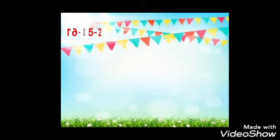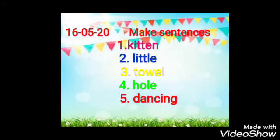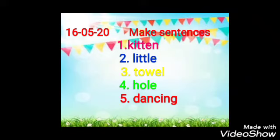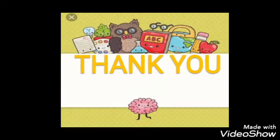Now students, you will make some sentences from these words: first is 'kitten' — baby of a cat; second, 'little'; third, 'towel' — तौलिया; fourth, 'hole' — छेद; fifth, 'dancing' — नाच रहा है. Write and make sentences from these words, and your writing should be very good. Stay at home and stay safe. Thank you.